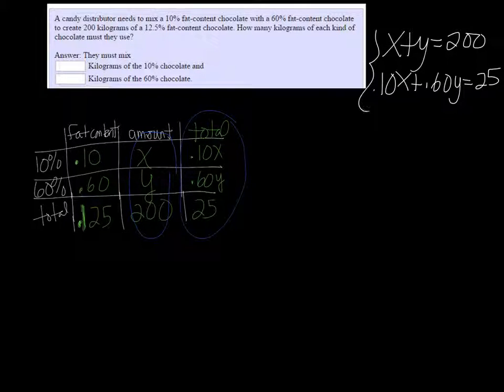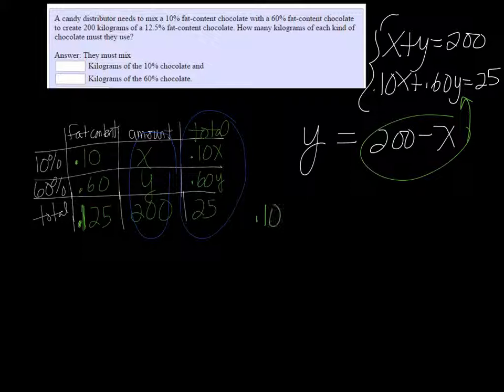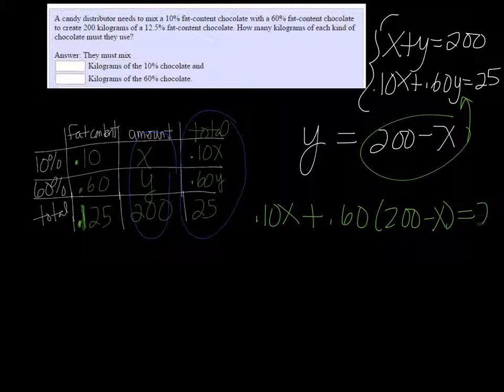We have a two equation, two unknown scenario here. I'm going to use substitution. I'm going to solve for y in the first equation, so y is equal to 200 minus x. And then if I put that in for y in the second equation, I come up with 0.10x plus 0.60 times (200 minus x) equals 25.